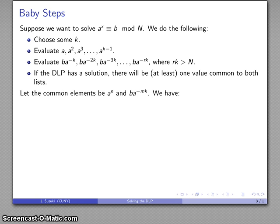You might think that's a pretty impressive claim, but actually it's fairly easy to see why that has to be true. Suppose that the two elements that are the same are A to some power n, and B times A to some power minus M times k. Because they're the same, they're going to be equivalent. And what I can do is multiply both sides by A to power Mk, and I get A to power Mk plus n congruent to B mod N. And so there's my solution, Mk plus n, to the discrete logarithm problem.